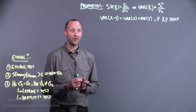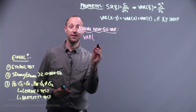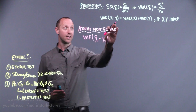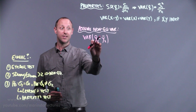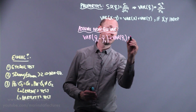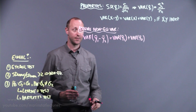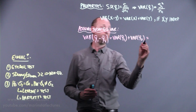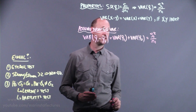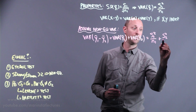Now let's work out the standard error under the assumption of non-equal variances. The variance of the mean of group 1 minus the mean of group 2 equals the variance of the mean of group 1 plus the variance of the mean of group 2, since groups 1 and 2 are independent. The variance of the mean for each group is the sample variance of the individuals in that group divided by their sample size.